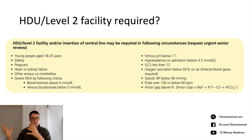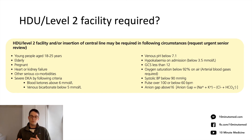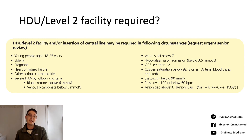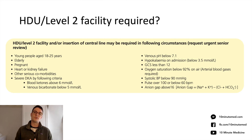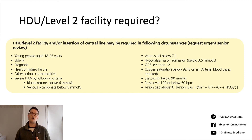Consider whether HDU or ITU needs to be involved. Particular cohorts to be worried about include young patients, elderly patients, those with heart failure or kidney failure, severe DKA with an anion gap above 16, low blood pressure, low GCS, and — as mentioned — a potassium on admission of less than 3.5, because higher-rate potassium replacement cannot be safely given on the ward.